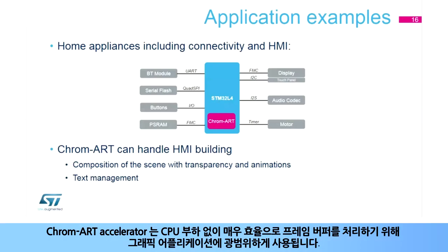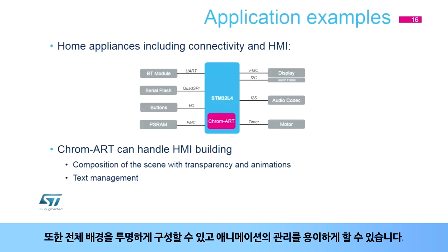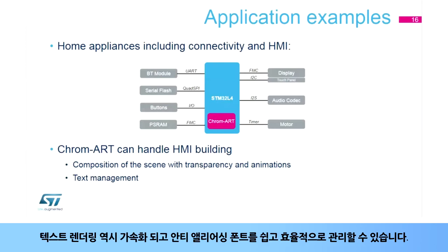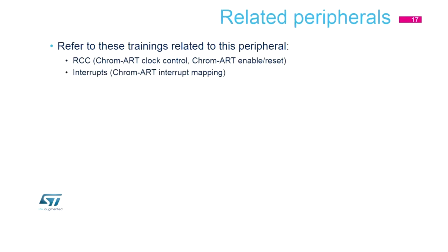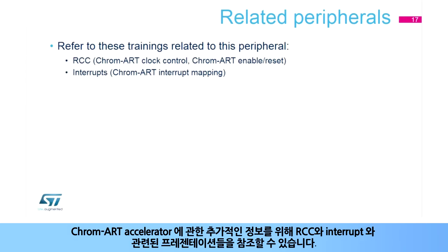The Chroma Art Accelerator is widely used in any graphical application to compute the frame buffer without any CPU load and with a very efficient throughput. It can compose the whole scene with transparency and facilitate the management of animations. Text rendering is also accelerated, making it easy and efficient to manage anti-aliased fonts. You can refer to the trainings related to the RCC and interrupts for additional information.